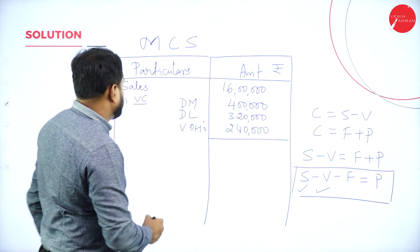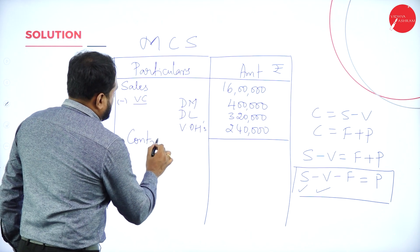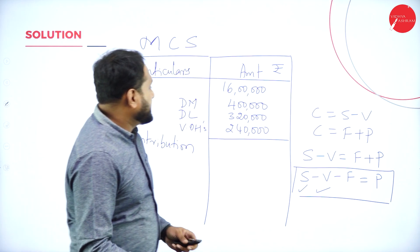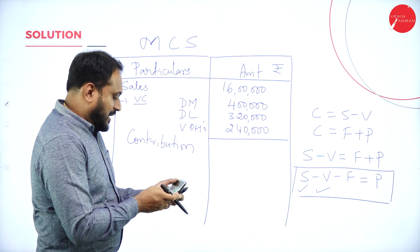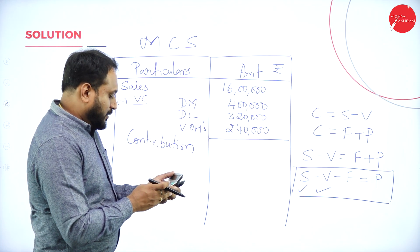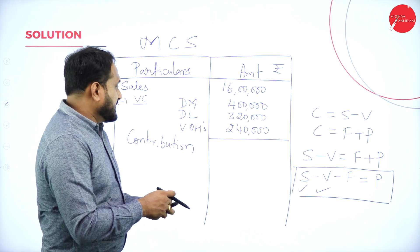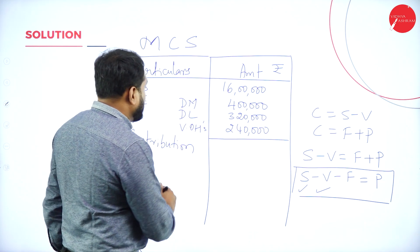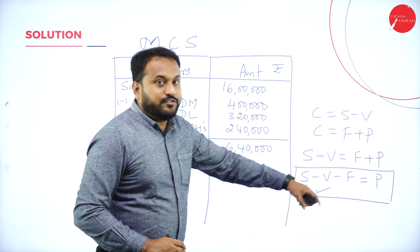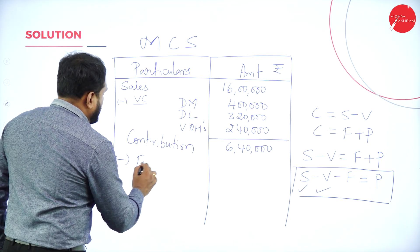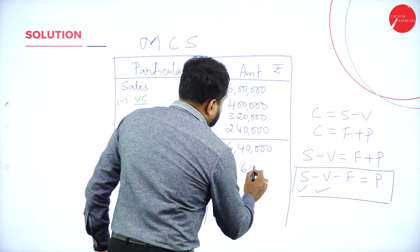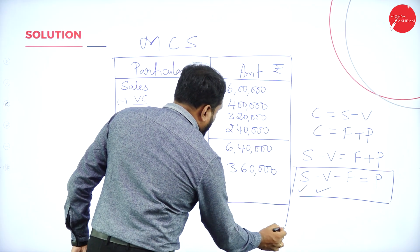Sales minus Variable Cost gives Contribution. So: 16,00,000 − 4,00,000 − 3,20,000 − 2,40,000 = ₹6,40,000. Contribution is ₹6,40,000. After that, we subtract Fixed Cost, which is ₹3,60,000.